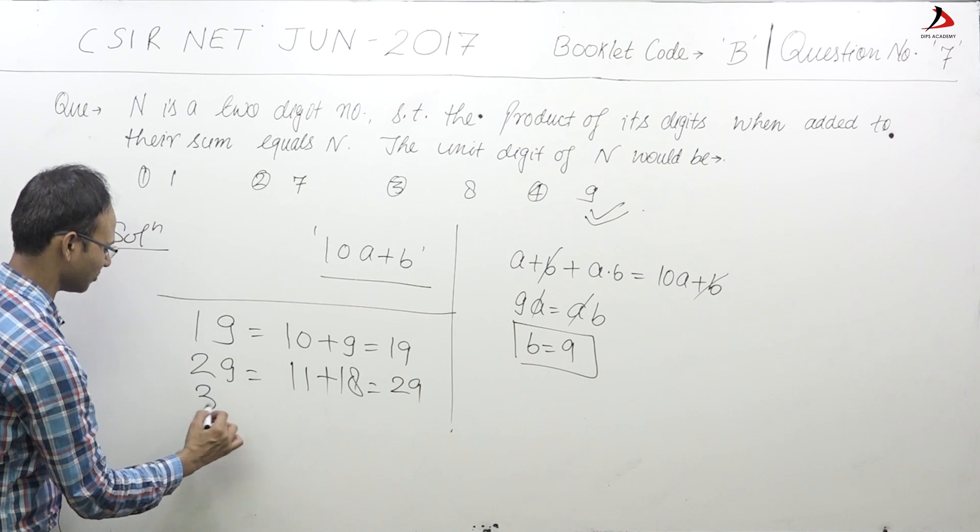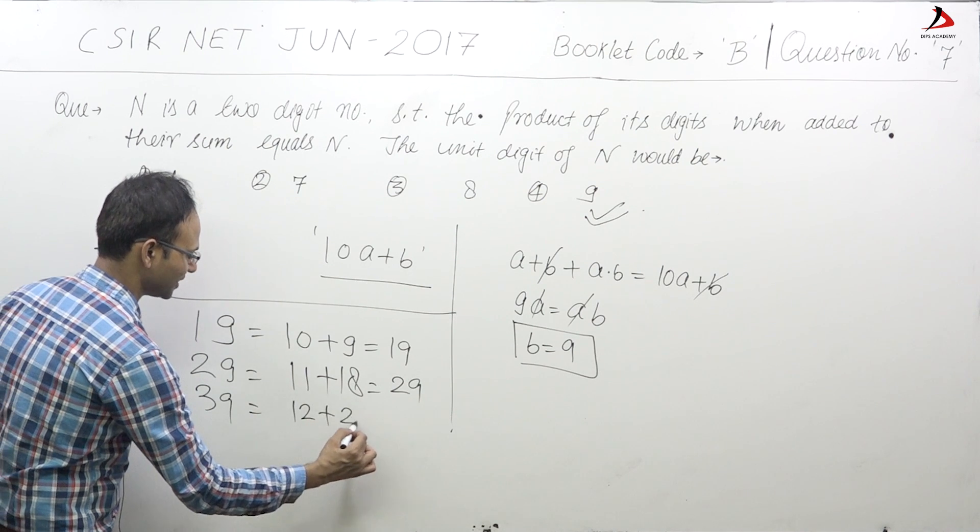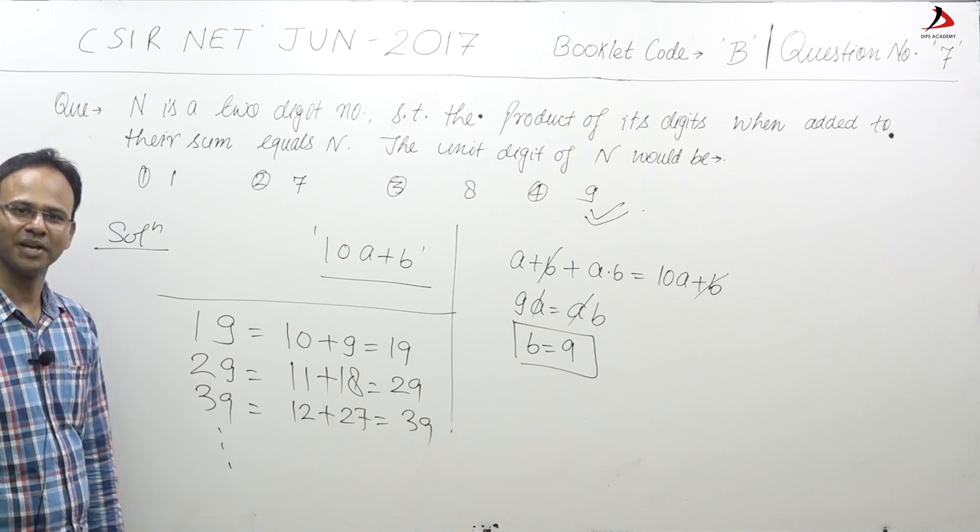Let us take one more example, 39. Sum of the digits is 12, product is 27, the number is 39. Thank you.